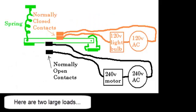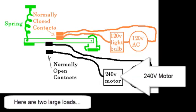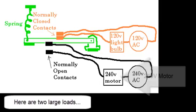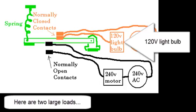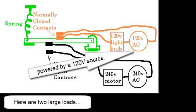Here are two large loads: a 240-volt motor powered by a 240-volt power source, and a 120-volt light bulb powered by a 120-volt source.